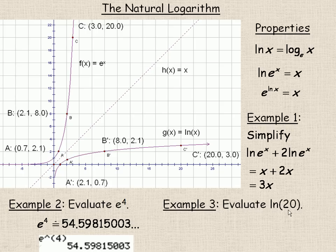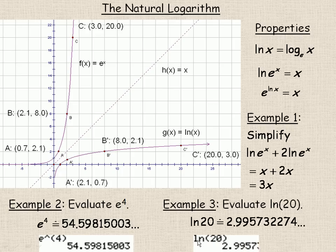If we want to find the ln of 20, and it's just a calculator exercise, it would look like this in my calculator. The ln of 20 is just under 3, 2.99. So, that's what the ln of 20 is.